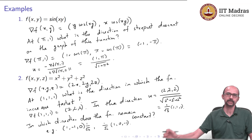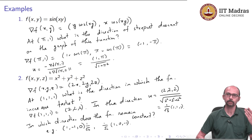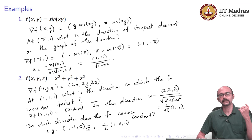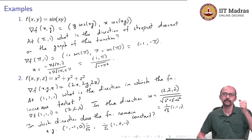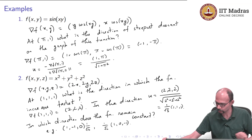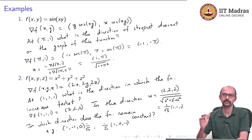This video is extremely important because this is exactly what you will use when you do something called gradient descent in machine learning. In machine learning, gradient descent is used to keep decreasing some quantity, and when you are at a particular solution you try to minimize it so as to get a better solution. Please understand this video very well.